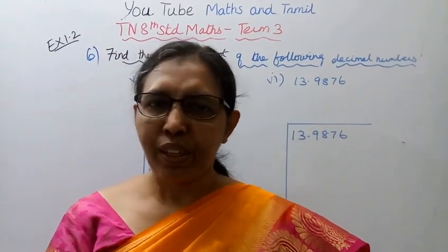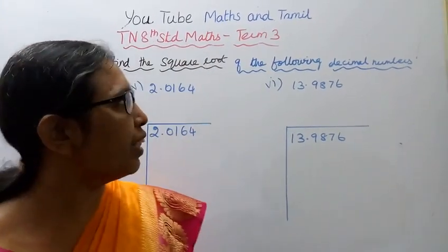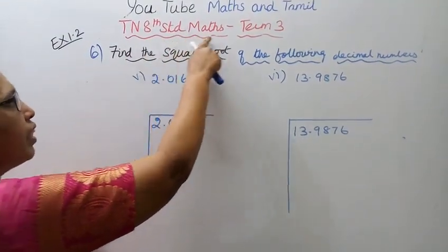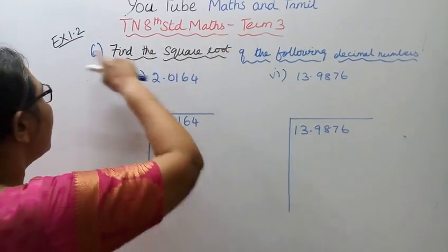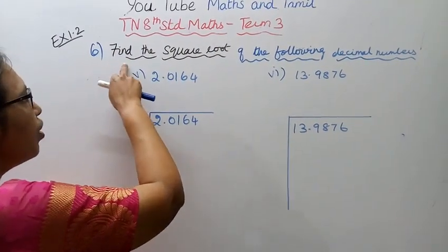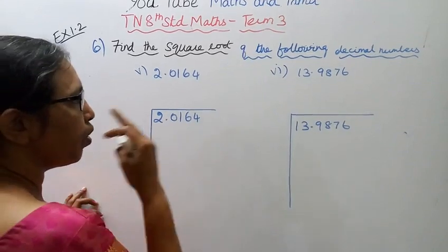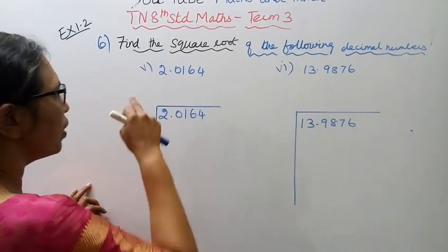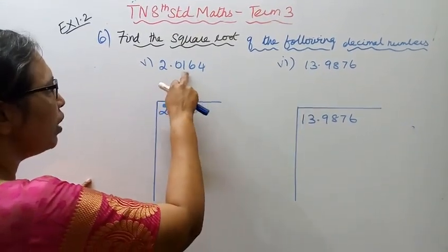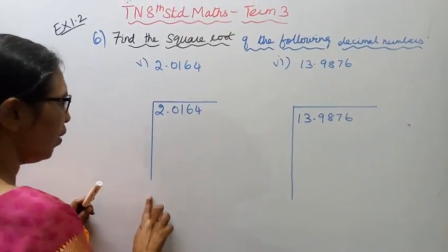Hello students, welcome to Max Tamil channel. Today we have TN 10th standard, Term 3, Exercise 1.2, Question 6: find the square root of the following decimal numbers. The 5th problem is 2.0164. Let's work through it step by step.